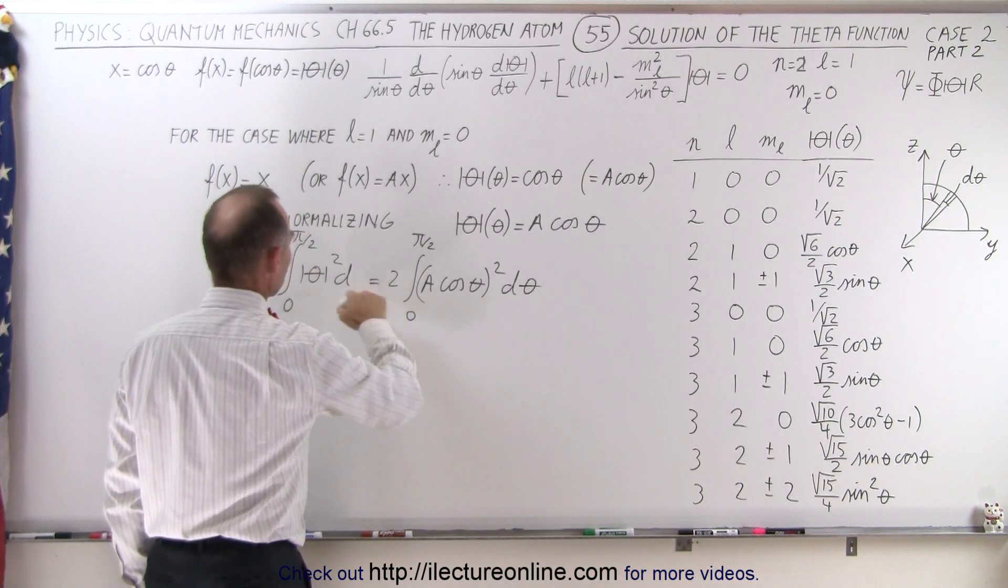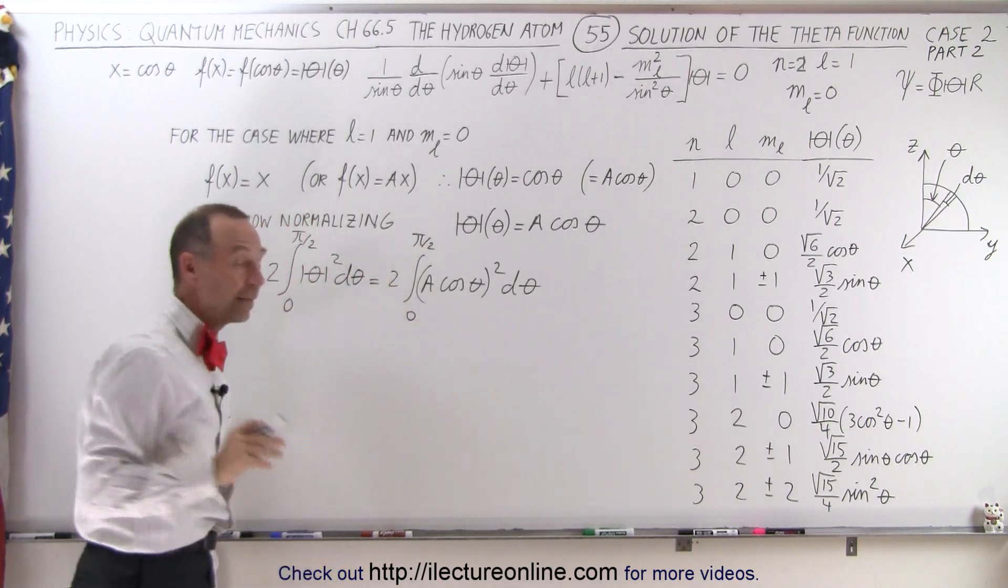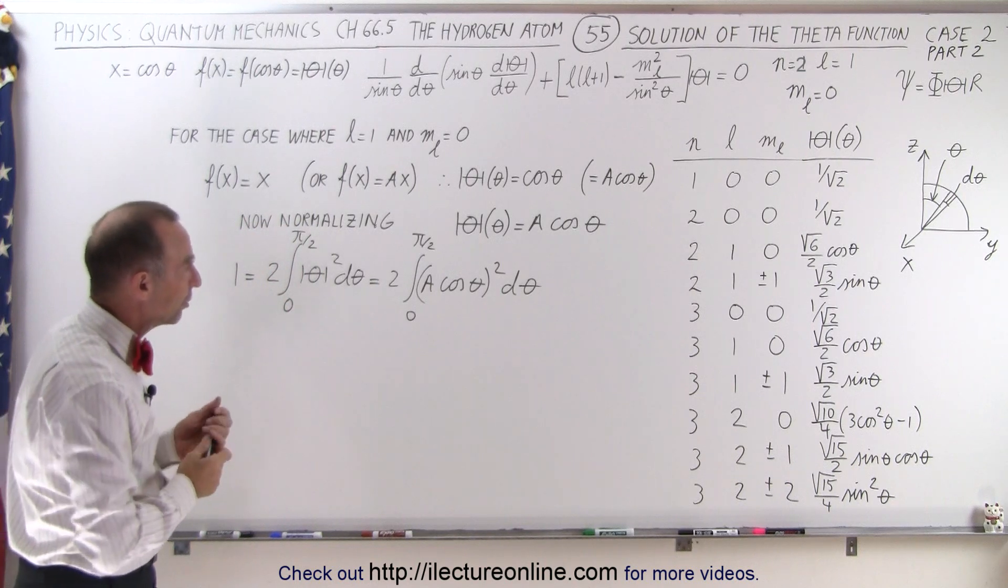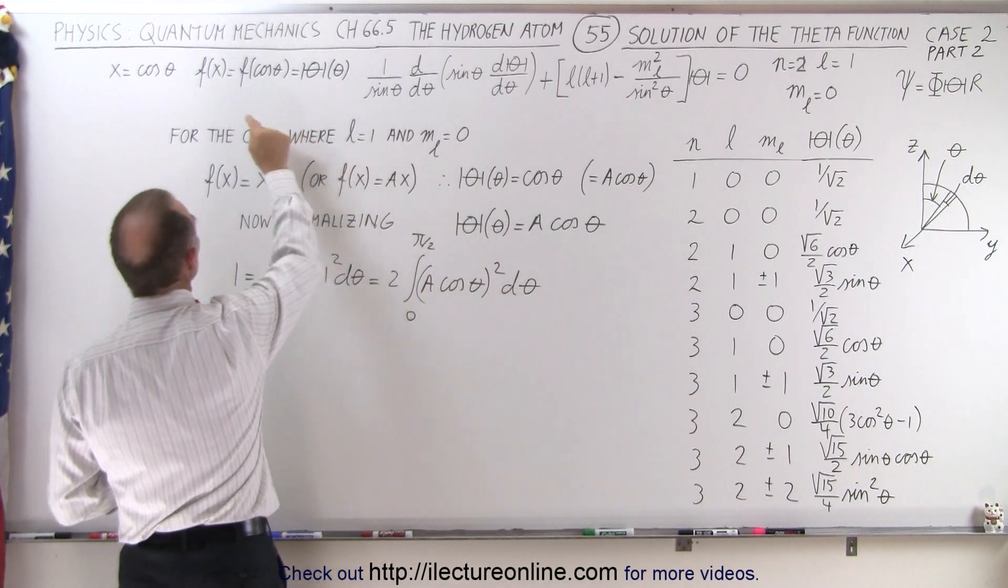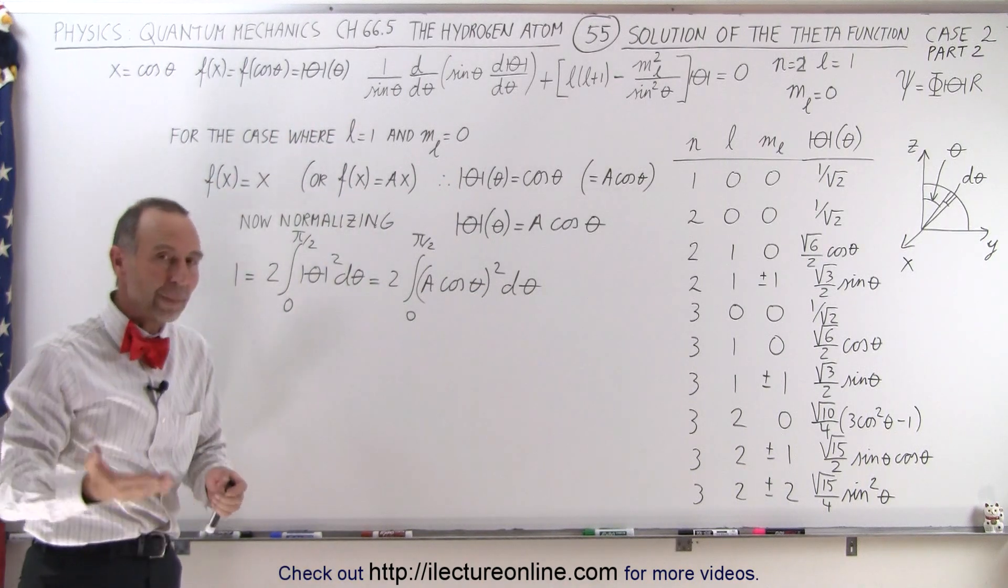So this is going to be equal to two times the integral from zero to pi over two of a times the cosine of theta, quantity squared times d theta. That shouldn't be a phi, that should be a theta here. All right, now, it's actually easier, instead of solving it in terms of the theta function, it's easier to solve it in terms of the f function.